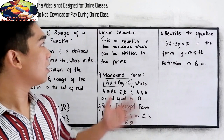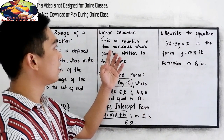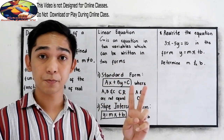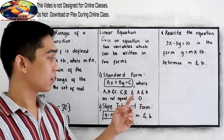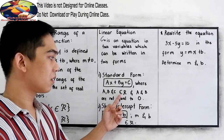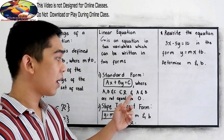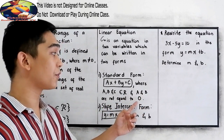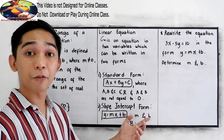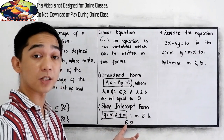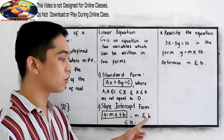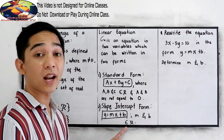We also have the linear equation. A linear equation is an equation with two variables which can be written in two forms. We have the standard form: ax plus by is equal to c, where a, b, and c are real numbers and a and b are not equal to 0. And the slope-intercept form: y is equal to mx plus b, where m and b — the slope and the y-intercept — are elements of the real numbers.